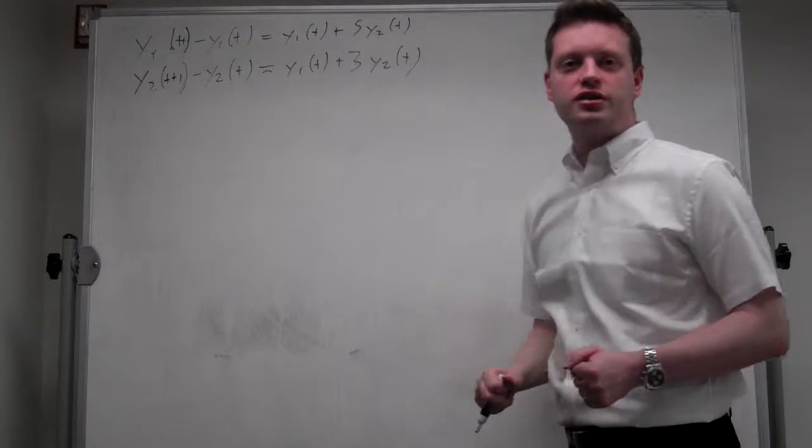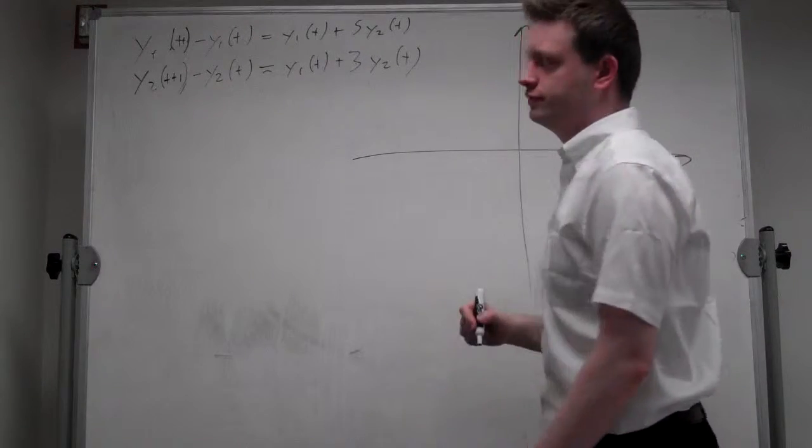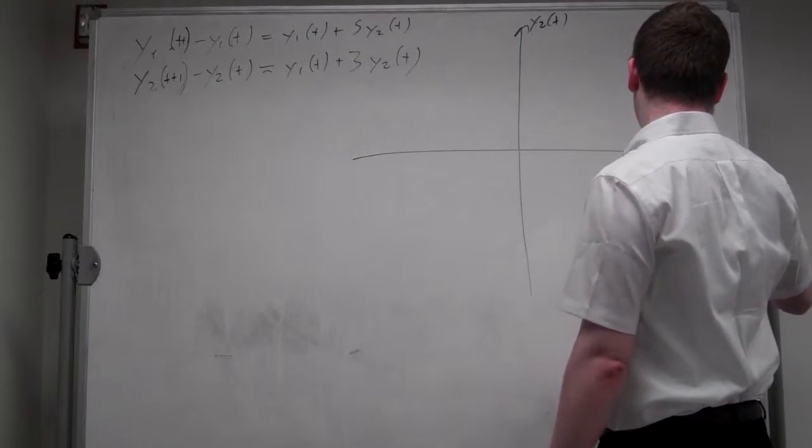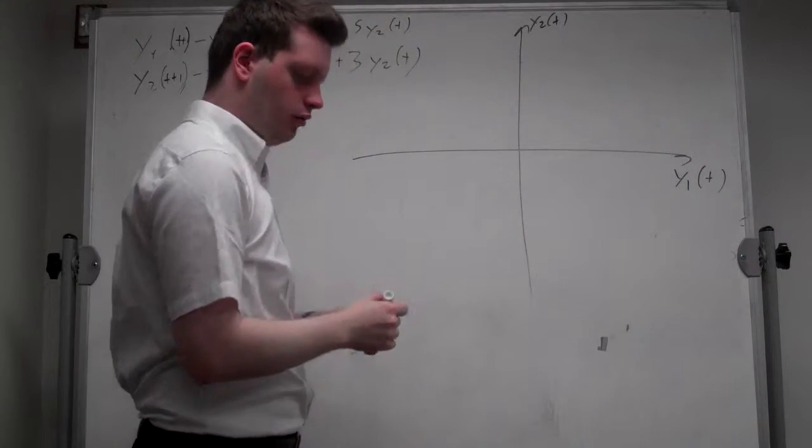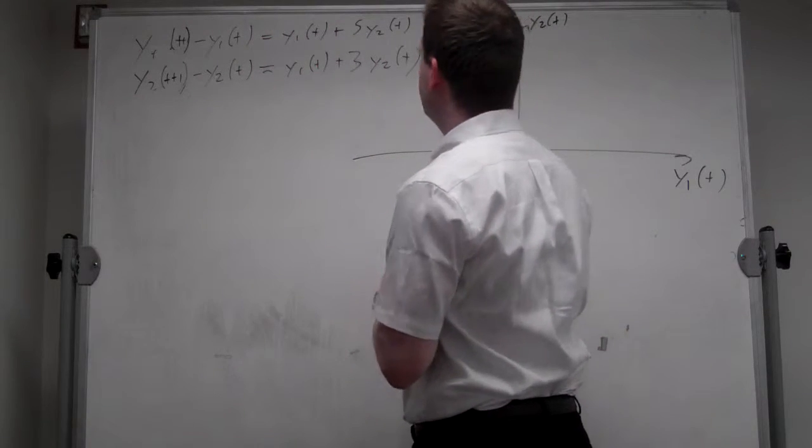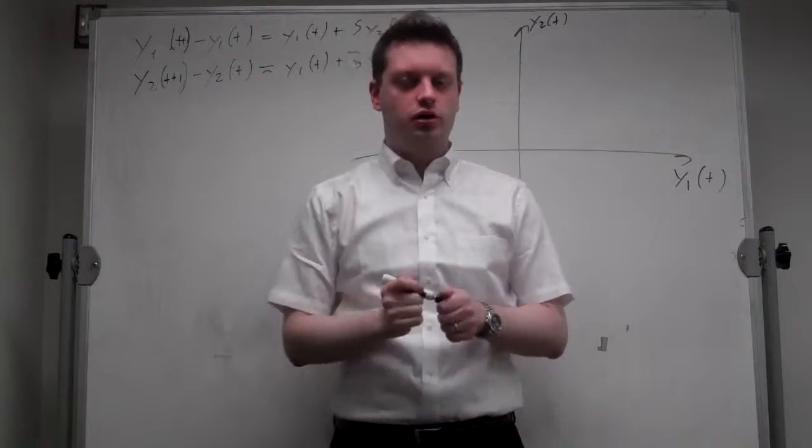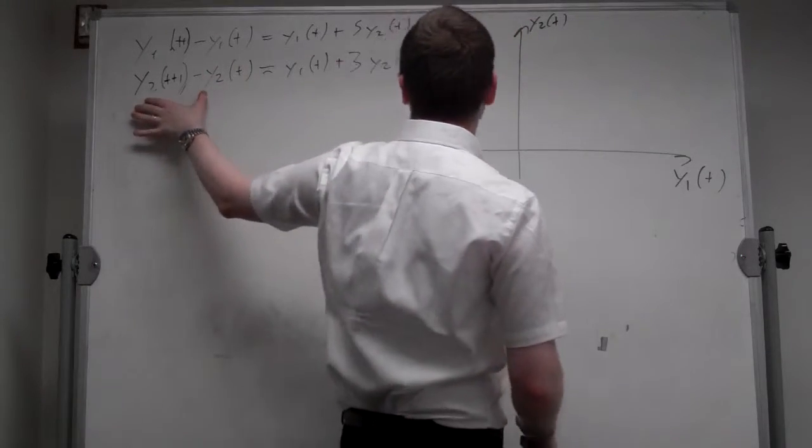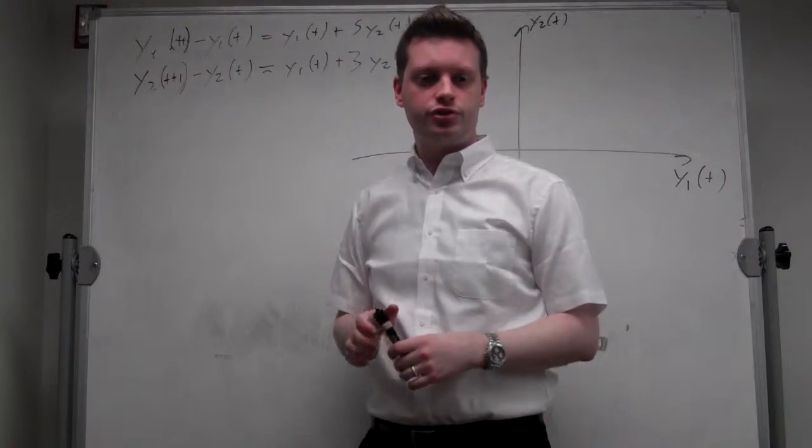And we can draw this now into a nice diagram. Alright, let's put on the vertical axis y_2t and on the horizontal y_1t, and we want to draw the lines for these two equations where they are equal to 0. So we're either, there's no vertical movement because the change in y_2 is equal to 0, or there's no horizontal change because the change in y_1 is equal to 0.